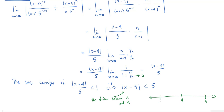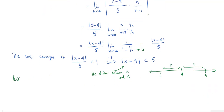Heading to the right from 4 gives 9; heading to the left gives negative 1. Each distance is 5. So our radius of convergence is equal to 5, and the interval of convergence goes between negative 1 and 9.